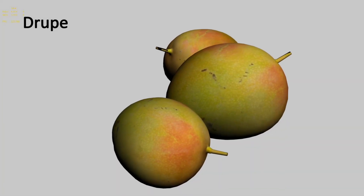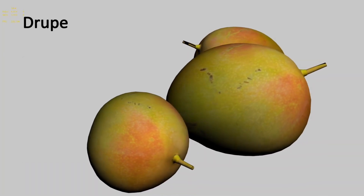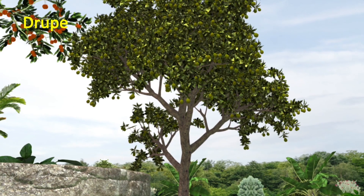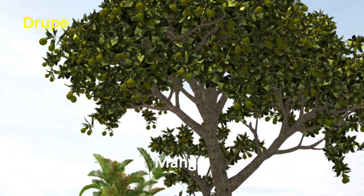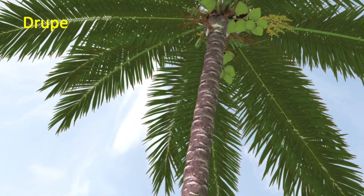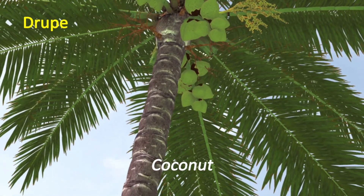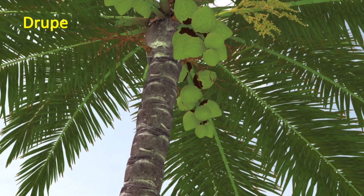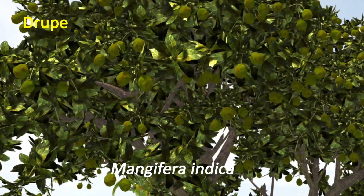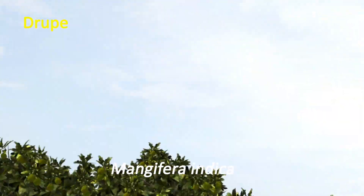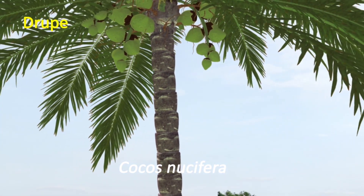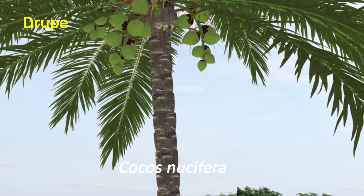Drupe: A drupe fruit develops from the monocarpillary, unilocular, superior ovary, usually with one seed. Drupe is seen in mango and coconut. Mangifera indica is the botanical name of the mango plant, and Cocos nucifera is the botanical name of the coconut plant.